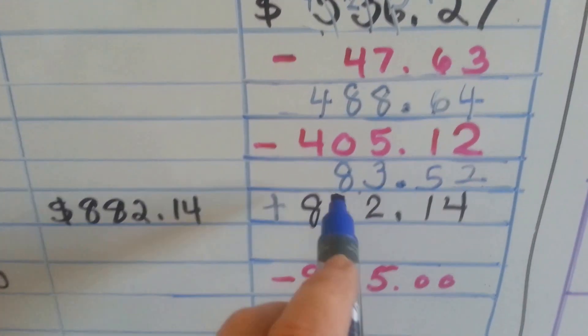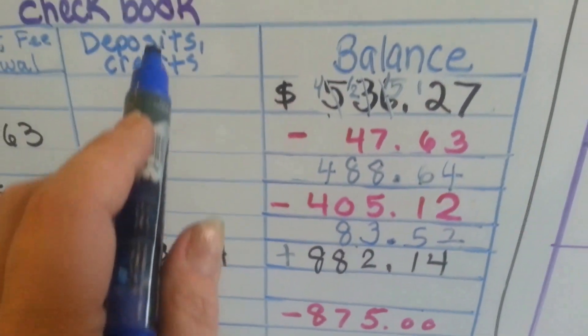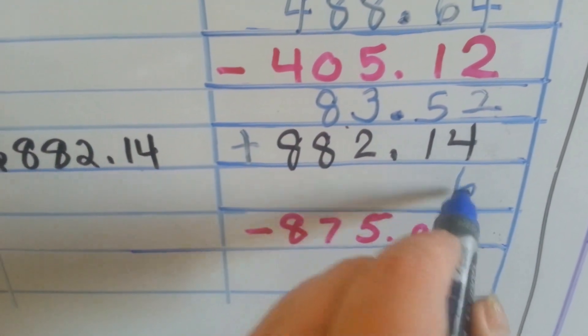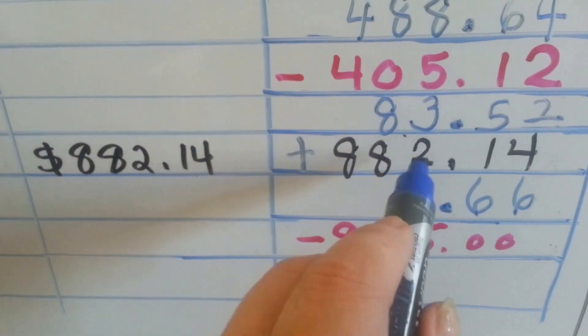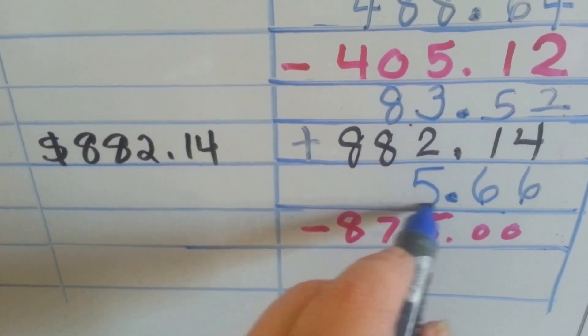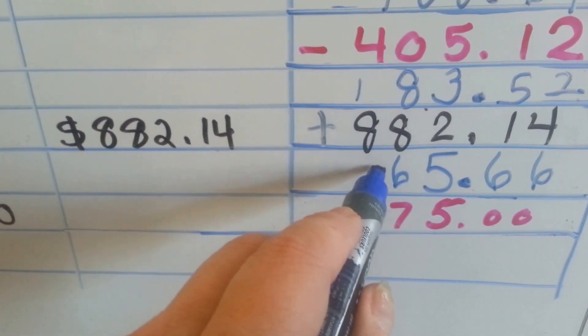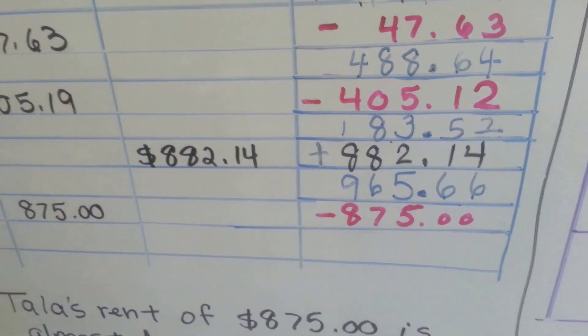We're going to add the paycheck to this balance. Because now we're going back up because she got paid, it's a credit. 2 and 4 is 6. 5 and 1 is 6. We put our decimal point. 3 and 2 is 5. 8 plus 8 is 16. We carry the 1 and put the 6 down. 1 and 8 is 9. So now we see she has $965.66.